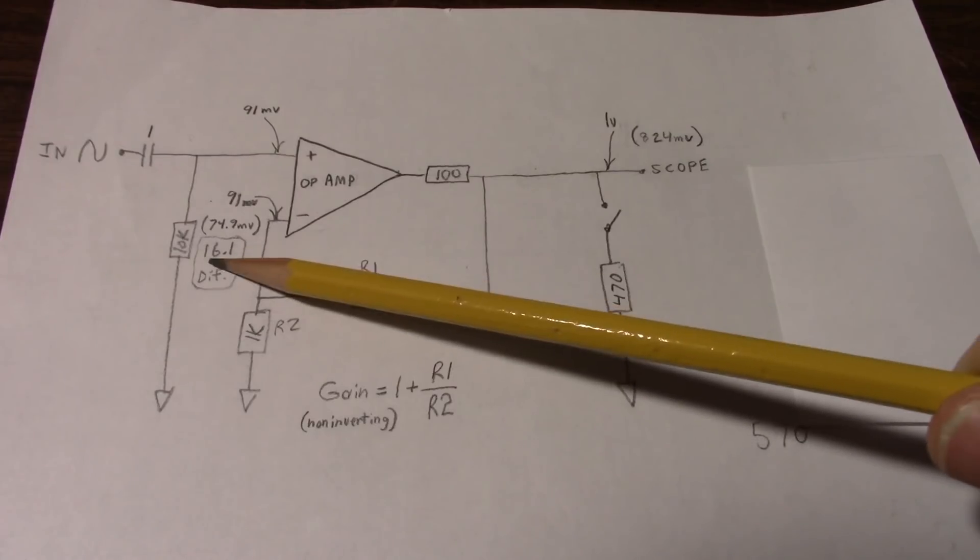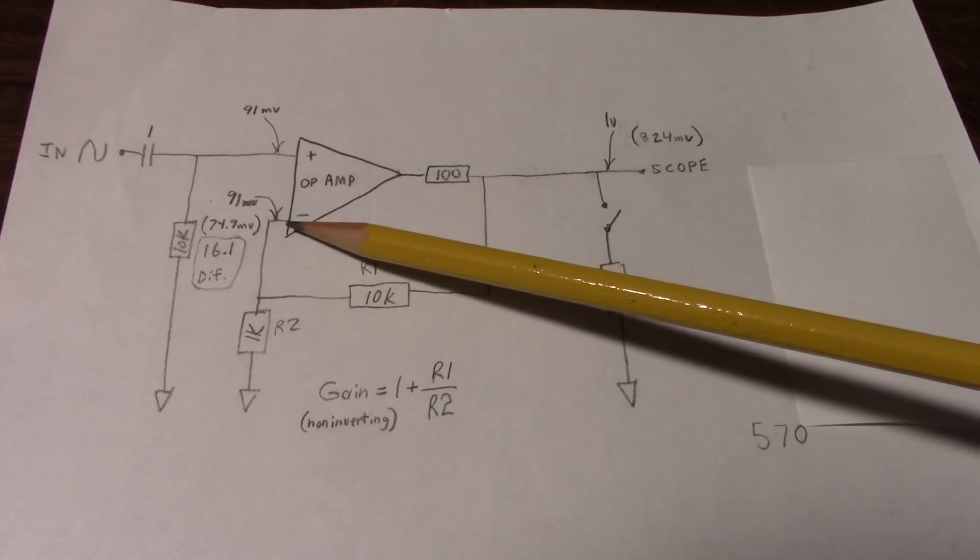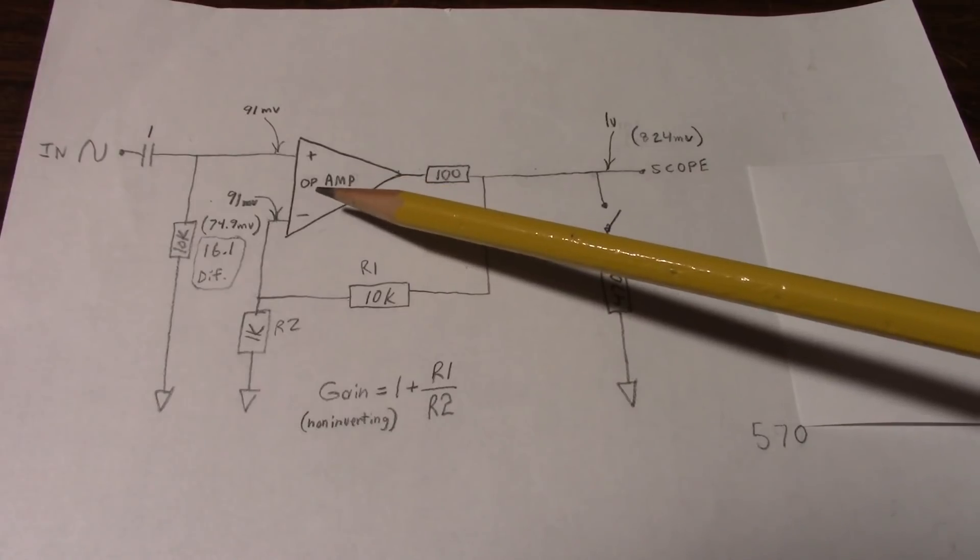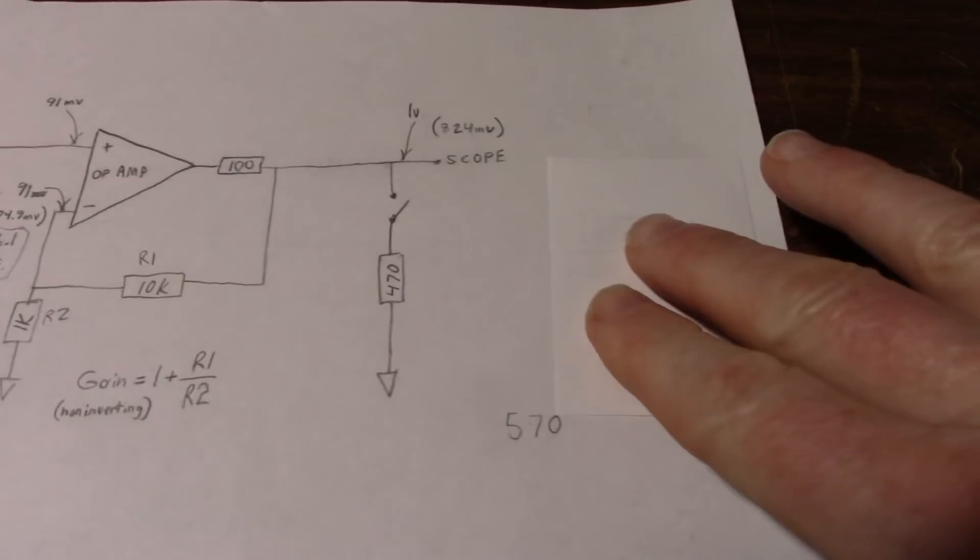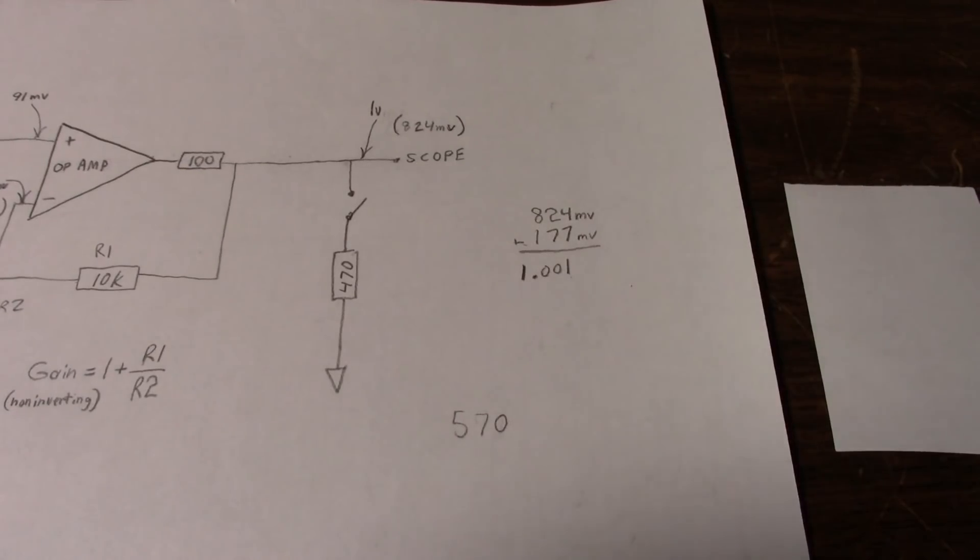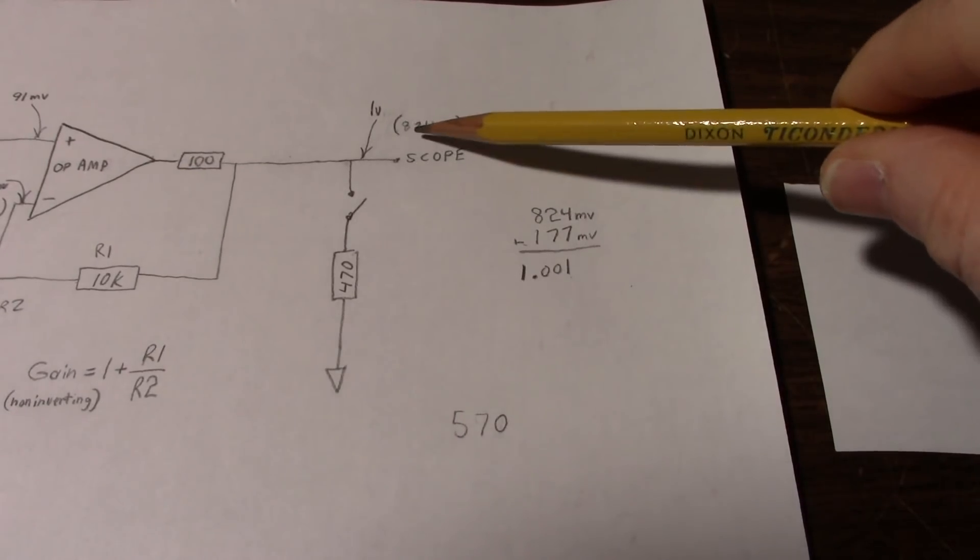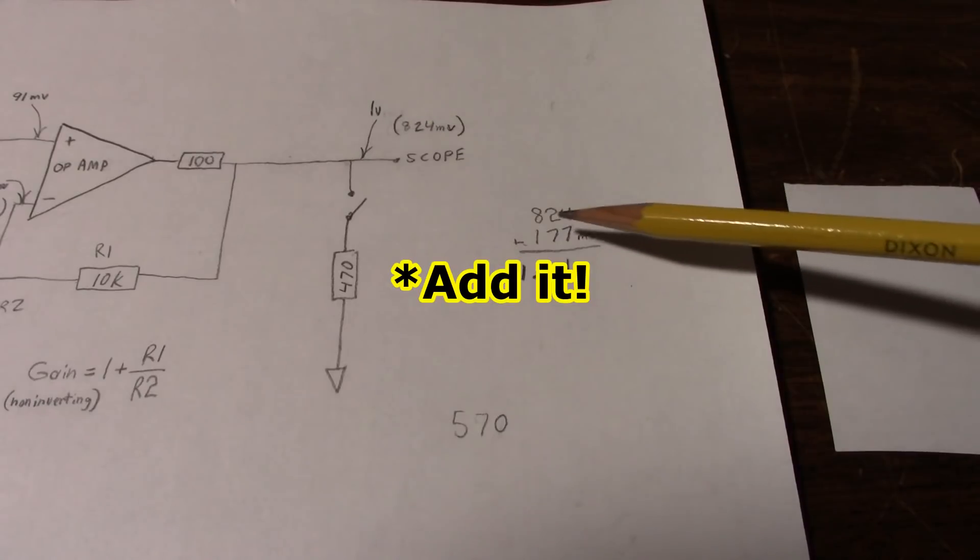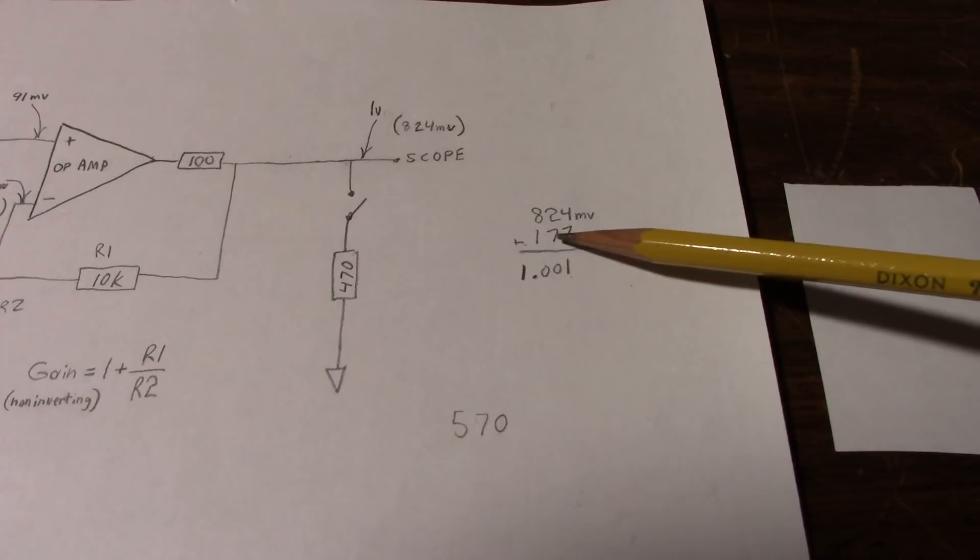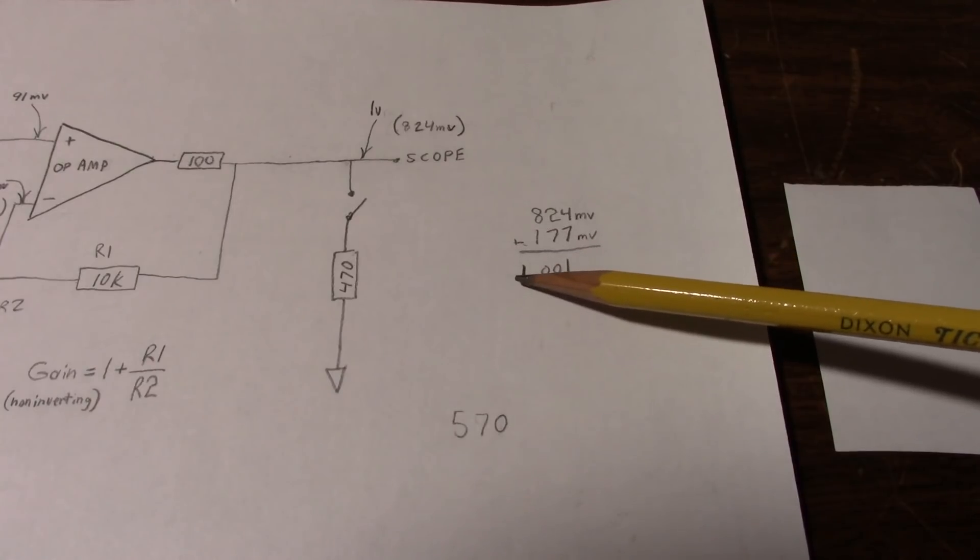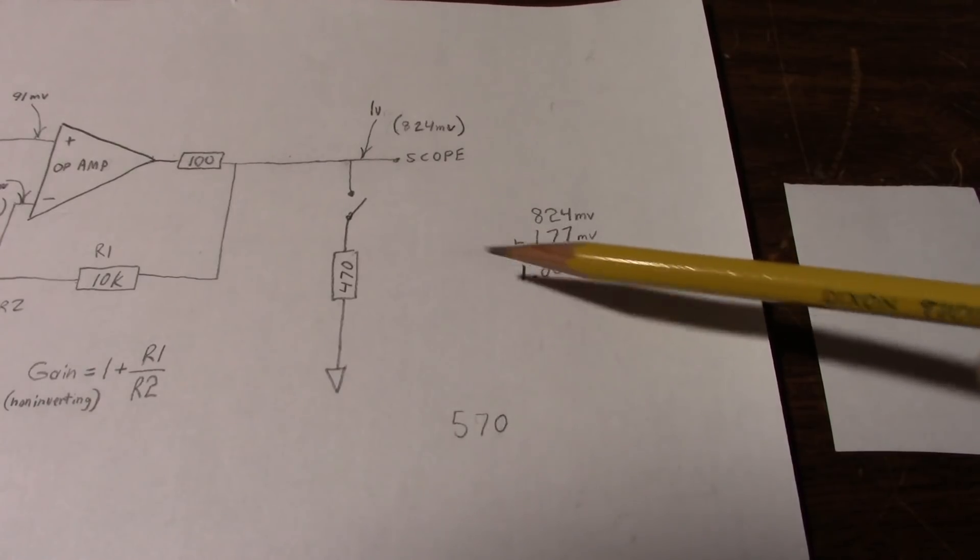So now if we run that through our amplifier, multiply it by the gain of 11, we get 177 millivolts. So we take that and multiply it by this voltage here, this 824 millivolts plus 177 millivolts. And look what happens. It brings it right back to 1 volt.